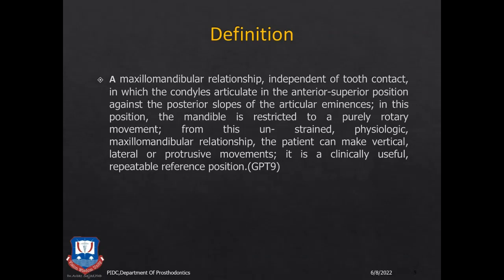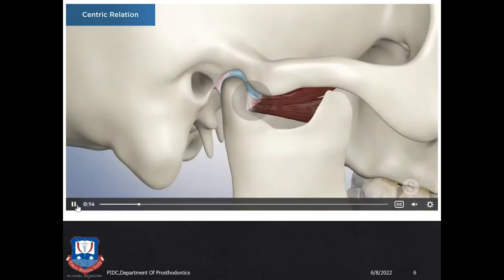It is a clinically useful repeatable reference point according to GPT-9. Centric Relationship is a relationship of the condyle — specifically, it is an anterosuperior relationship of the condyle against the posterior slopes of the articular eminence of the glenoid fossa. It is an unrestrained physiologic position in which the condyles purely rotate, exhibiting purely rotatory movement without any translation.